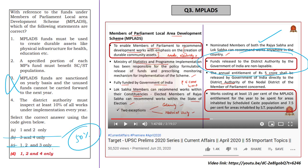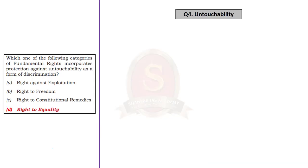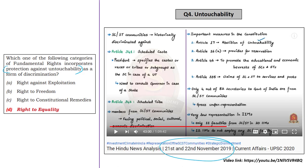If we take the question on fundamental rights about protection against untouchability, on 22nd November 2019 in the News Analysis we categorically mentioned that Article 17 of the Indian Constitution deals with abolition of untouchability, and Article 17 comes under the category of right to equality. So from this, you can easily arrive at the correct answer, which is Option D.